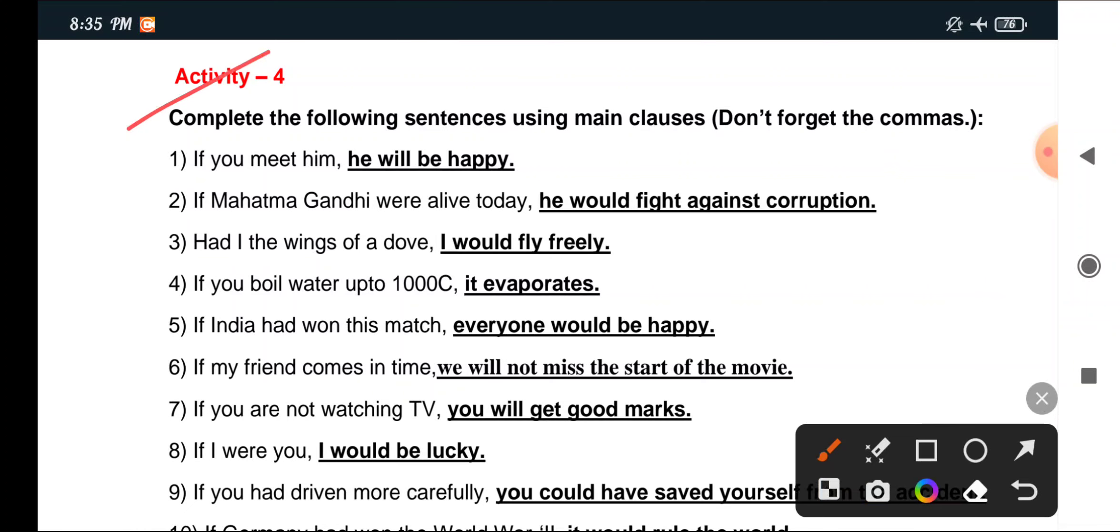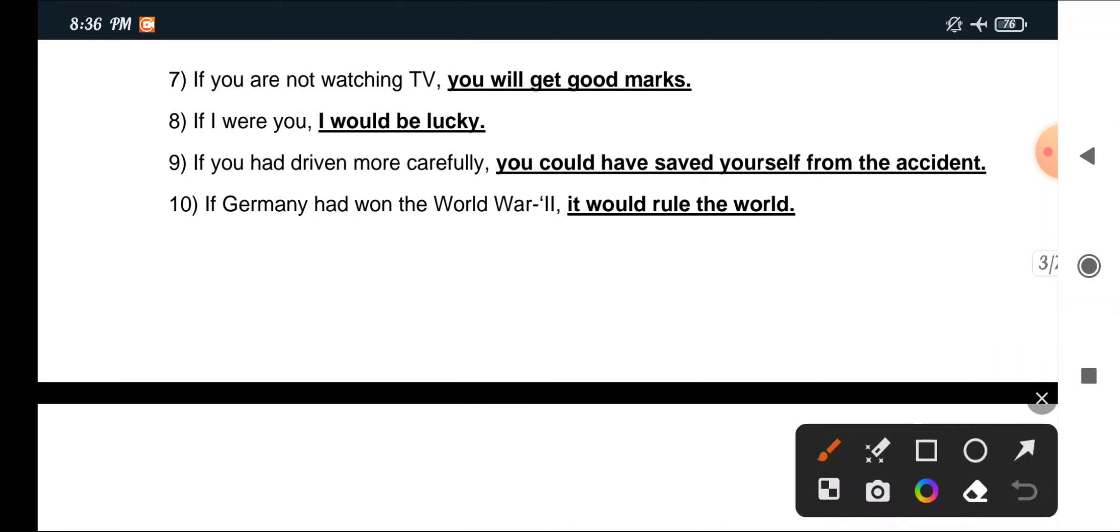Activity 4: Complete the following sentences using main clauses. Don't forget the commas. If you meet him, he will be happy. If Mahatma Gandhi were alive today, he would fight against corruption. Had I the wings of a dove, I would fly freely. If you boil water up to 100 degrees Celsius, it evaporates. If India had won this match, everyone would be happy. If my friend comes in time, we will not miss the start of the movie. If you are not watching TV, you will get good marks. If I were you, I would be lucky. If you had driven more carefully, you could have saved yourself from the accident. If Germany had won the World War II, it would rule the world.